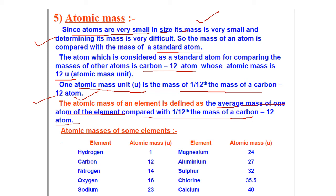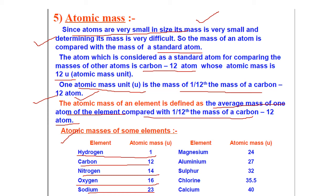By comparison using the carbon-12 standard, the atomic masses found are: hydrogen is 1, carbon is 12, nitrogen is 14, oxygen is 16, sodium is 23, and other elements were calculated in the same way.